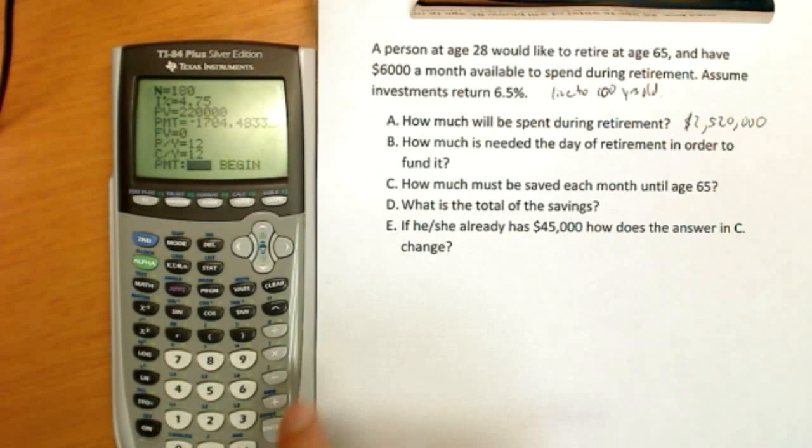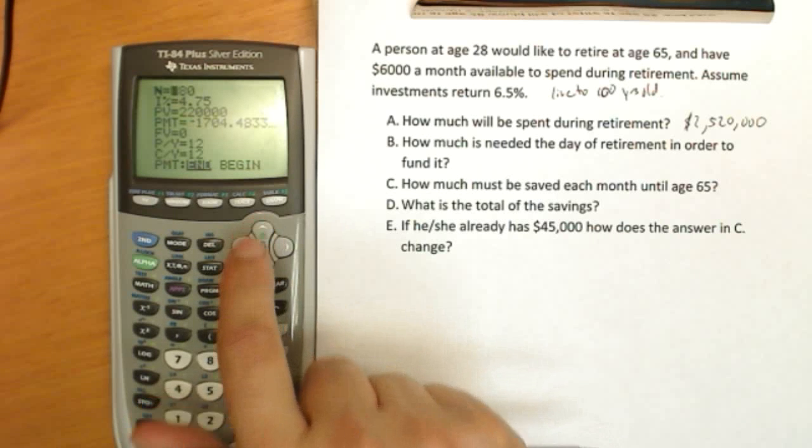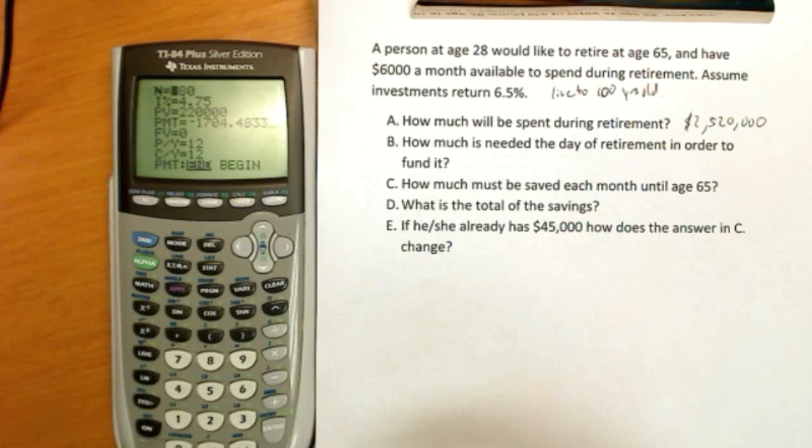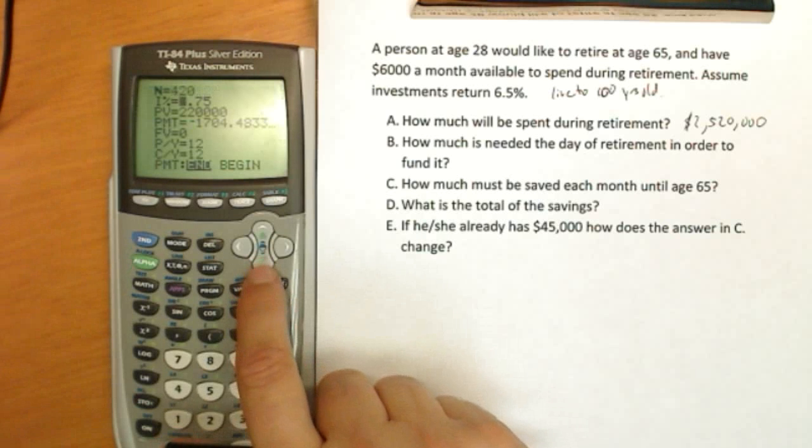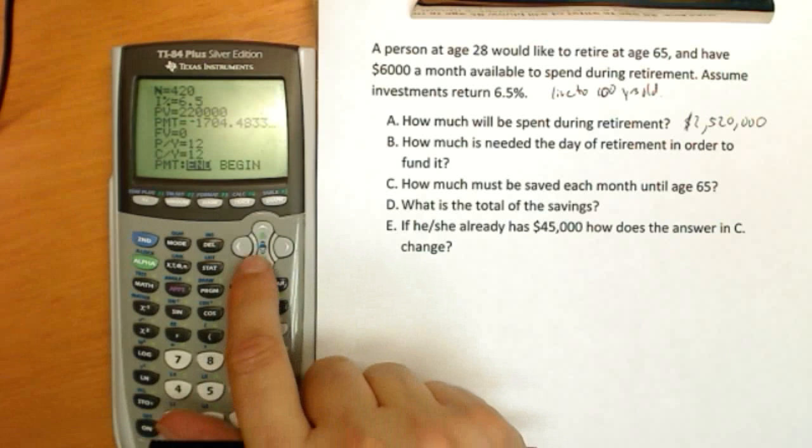Payments are going to be made at the end of the period. In this case, if you want to pay yourself at the end of the month or the beginning. They're going to live from 65 to 100, so that's 35 times 12 months.